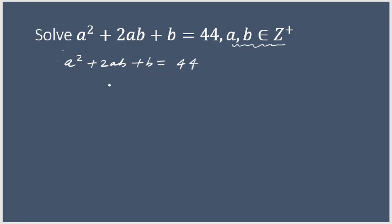In the first step, what I am going to do is take b common from the last two terms. So I am writing a² + (2a + 1)b = 44.